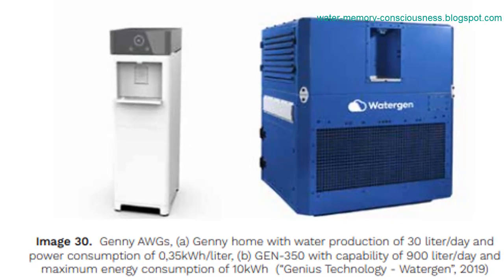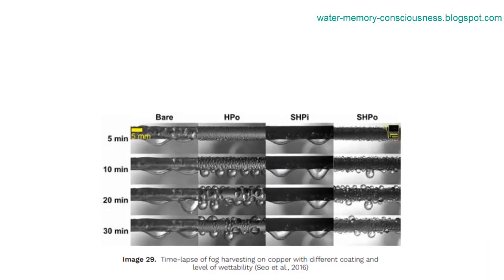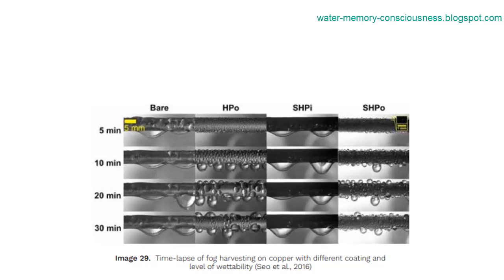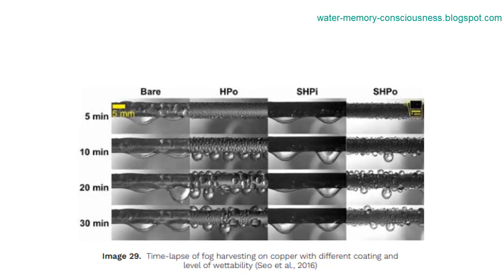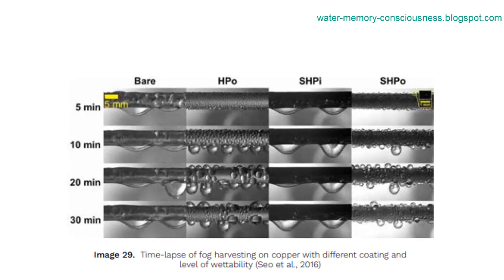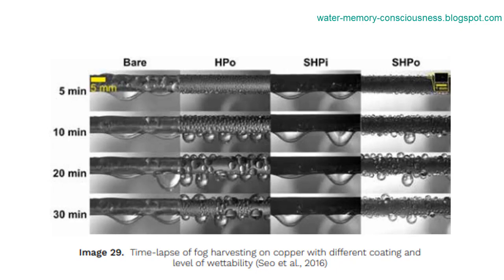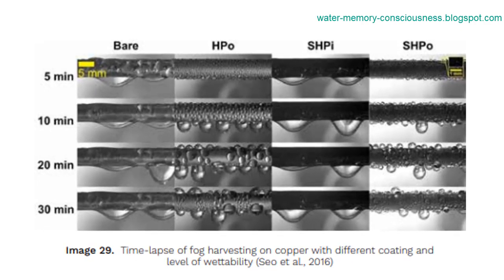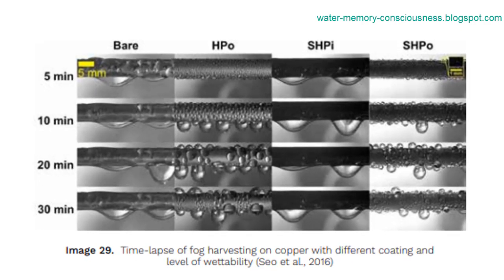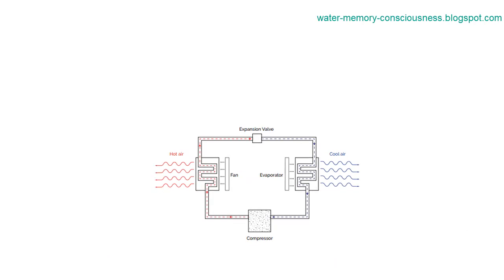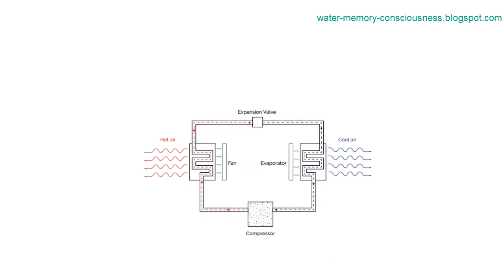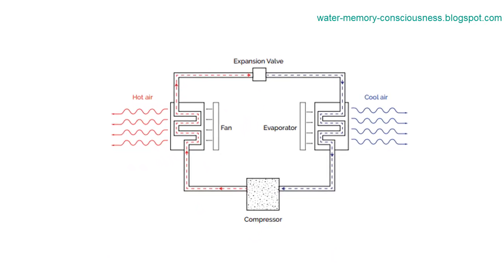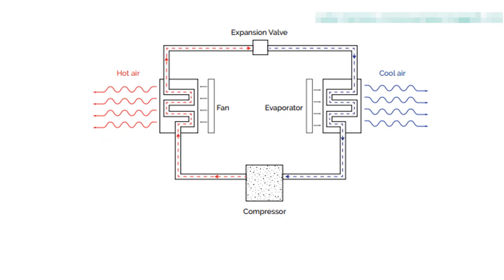Generating water from the air through AWGs presents a promising solution to address water scarcity. By understanding the factors that influence water vapor density and utilizing principles similar to refrigeration systems, AWGs can extract water efficiently. Alta University's involvement in the design and optimization of AWGs can contribute to creating innovative and sustainable water generation solutions, ultimately making a positive impact on global water security.